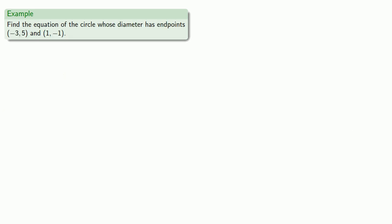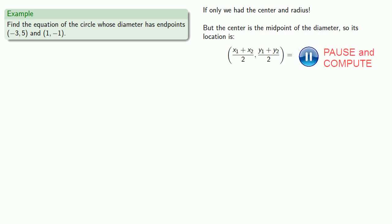What if we don't know the center of the circle? So we may want to try to find the equation of the circle whose diameter has endpoints (-3, 5) and (1, -1). If only we had the center and radius of the circle. But wait! The center is the midpoint of the diameter, so we can find its location by finding the midpoint of the diameter. The midpoint of the diameter will be (-1, 2).